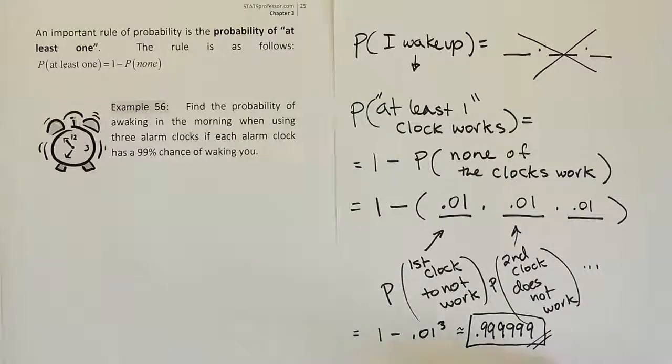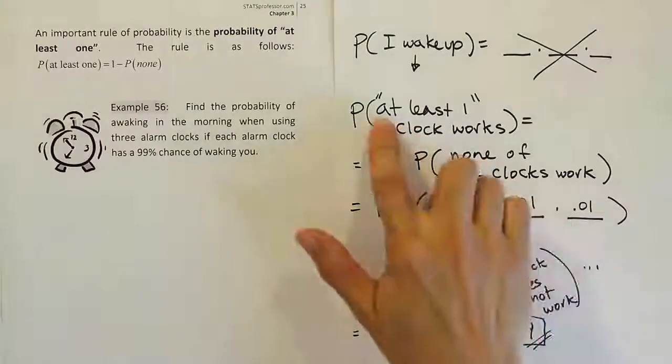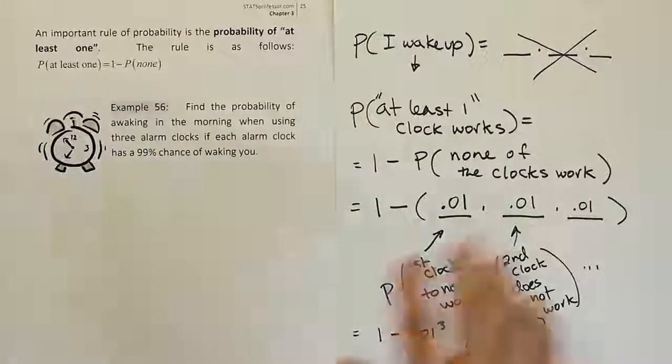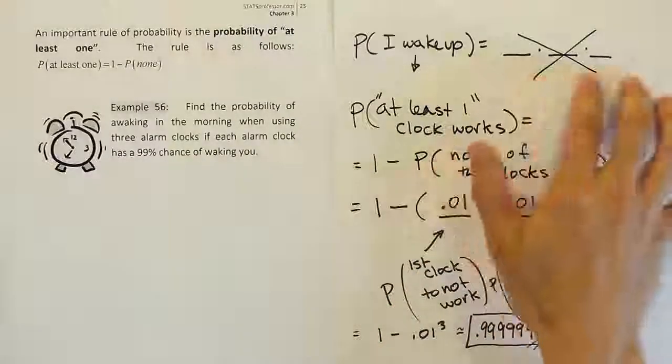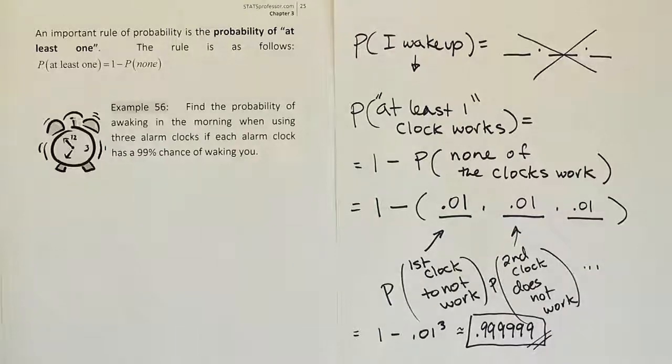Okay so there's the proper way to do the problem and we can see the value of at least one probability. It saved us having to work out seven separate scenarios and adding them all up to get the answer. So it's really a huge time saver.